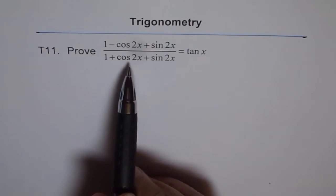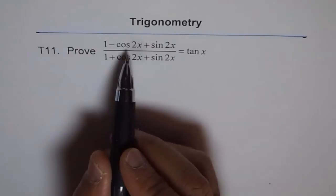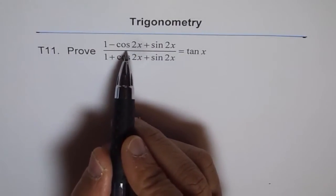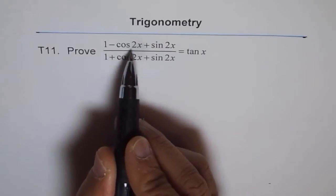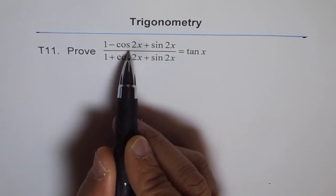Now here the thing is that you have to write cos 2x. Cos 2x has got three formulas. It could be written as cos square x minus sin square x. It could be written as 2 cos square x minus 1 or as 1 minus 2 sin square x.